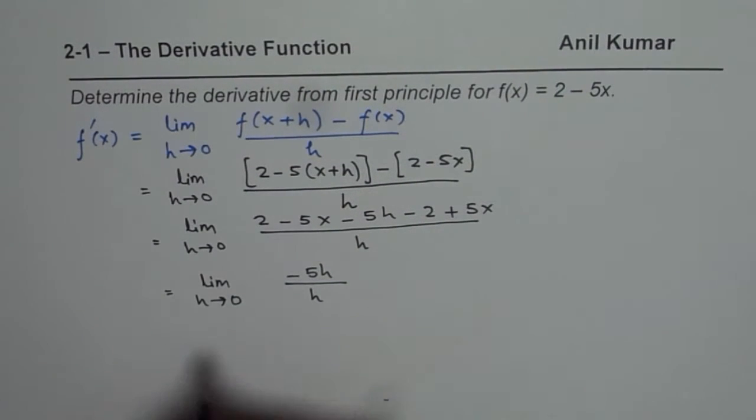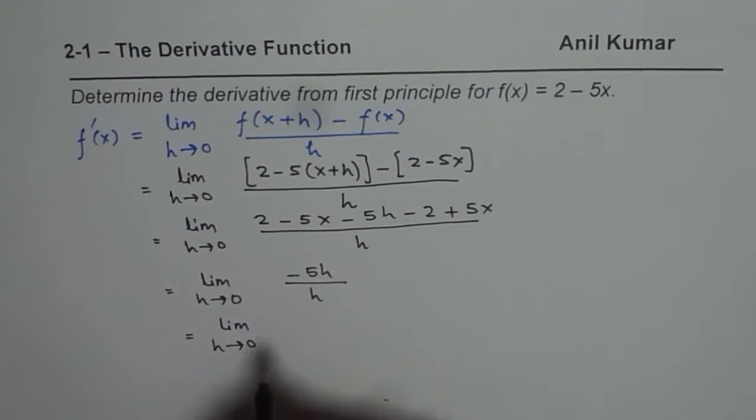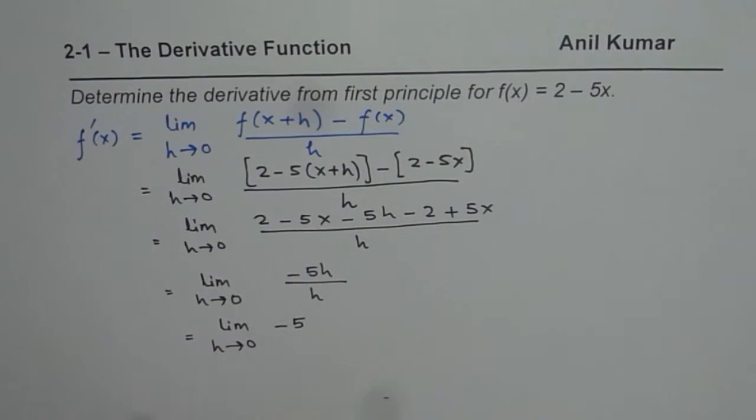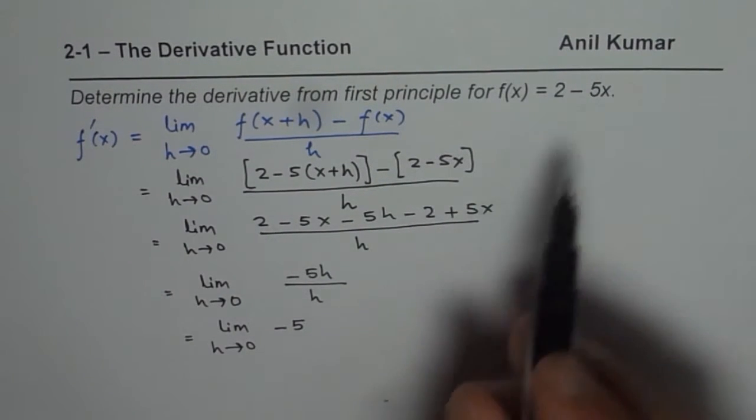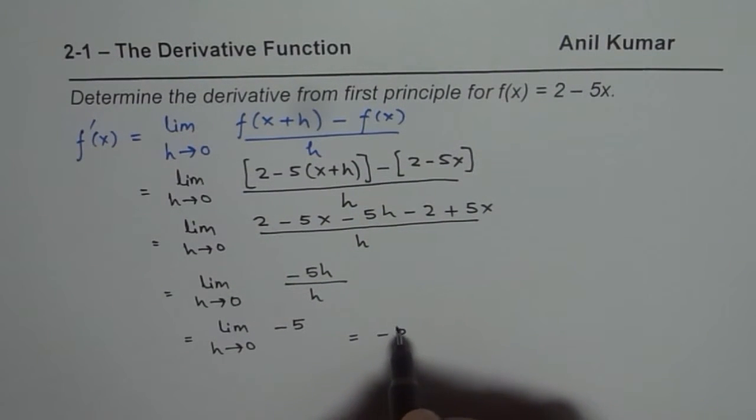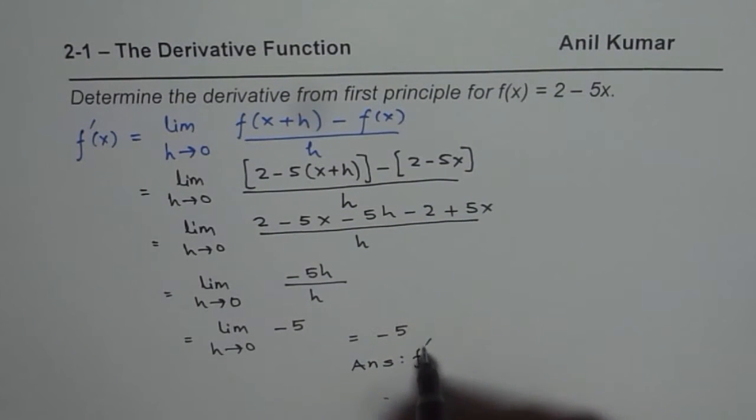This could be simplified and written as limit h approaches 0. h and h cancel out, so we get minus 5. So f dash x is minus 5 for this particular function. We can write down our answer.